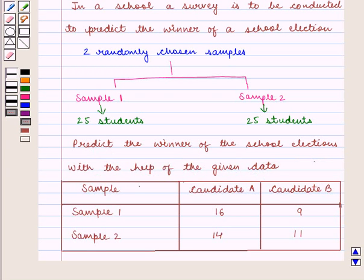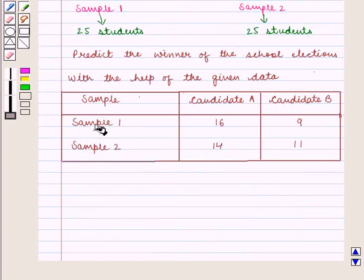Using the given data, we need to predict whether candidate A will be selected or candidate B will be selected. In both the samples, sample 1 and sample 2, we can see that maximum students voted for candidate A.